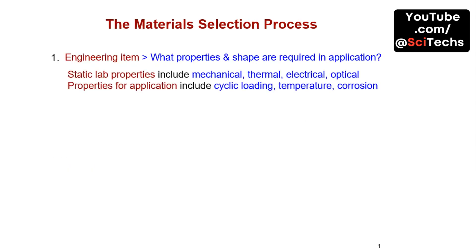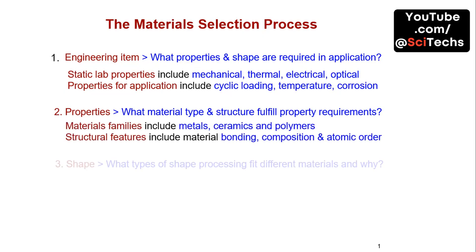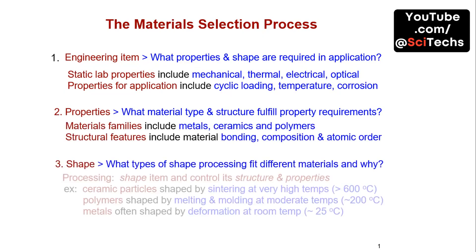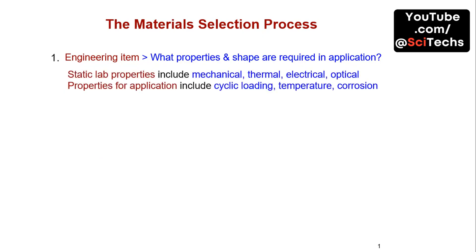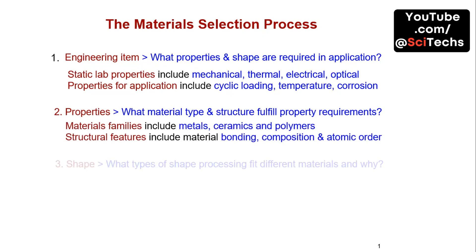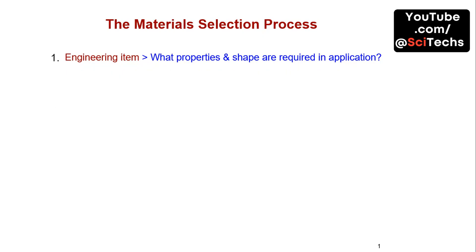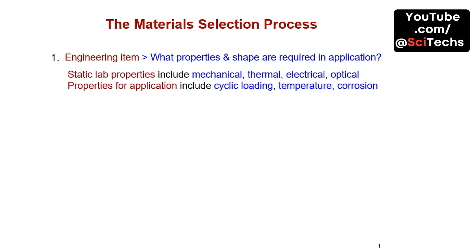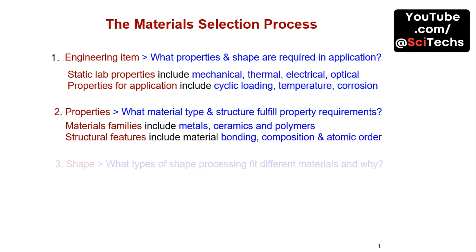Selecting the right material involves understanding the properties required for the application, the material type and structure, and the shape and processing methods. This process ensures the material meets the specific needs of the engineering item.